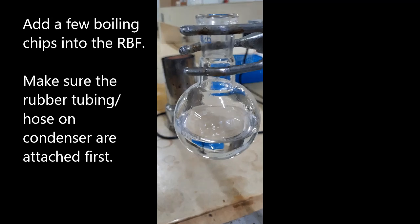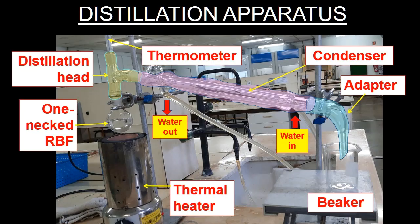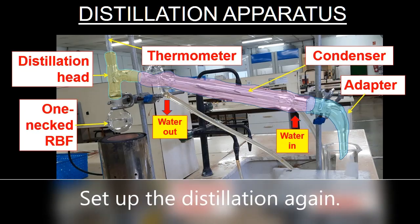Ensure that the rubber tubings are fixed to the condenser before setting up the distillation apparatus. Assemble the distillation setup again beginning by clamping the round bottom flask. Take note of the setup sequence as shown earlier.